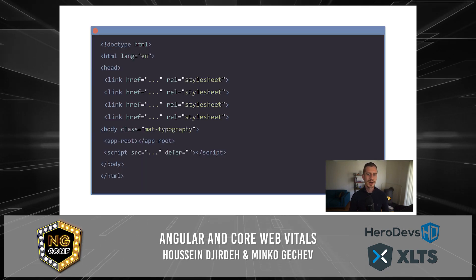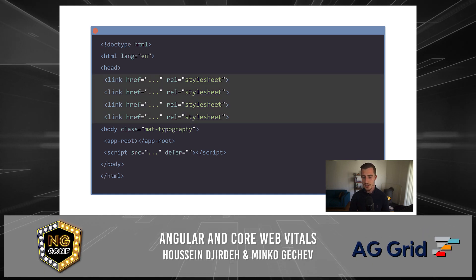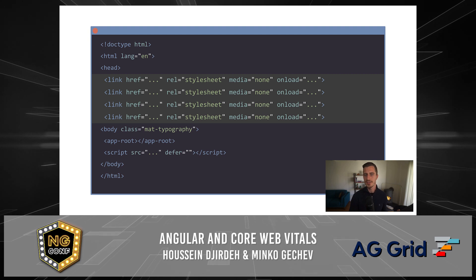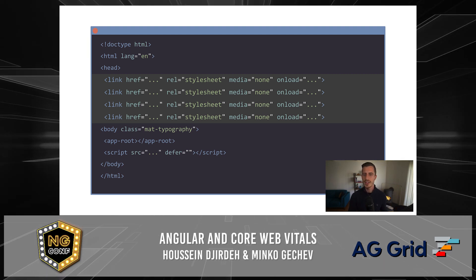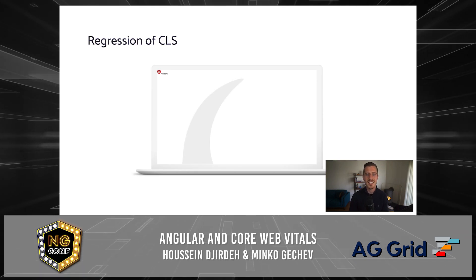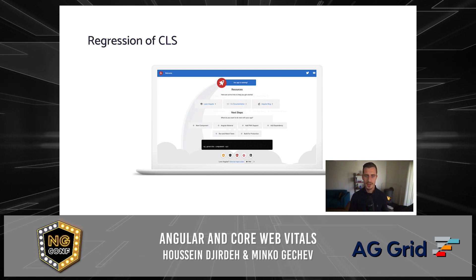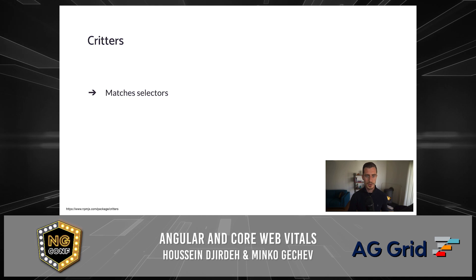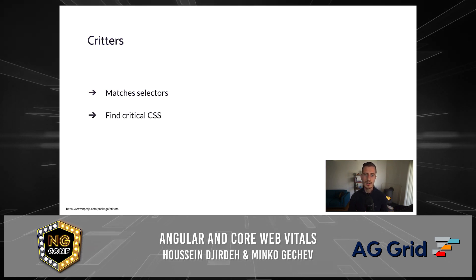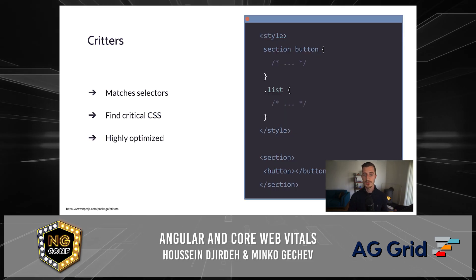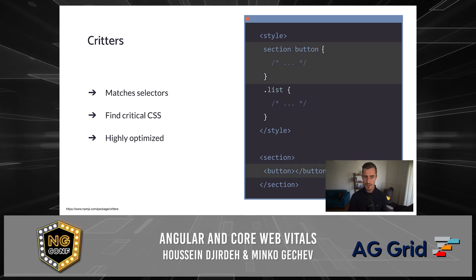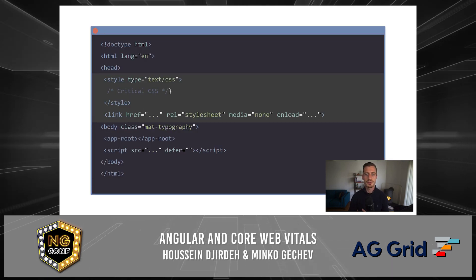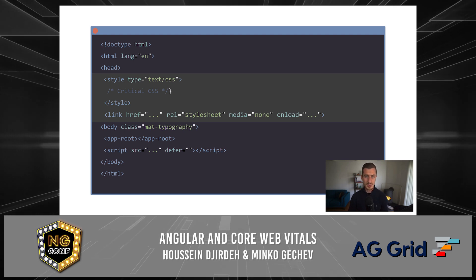At the same time, our app could have a lot of styles, which could delay both First Contentful Paint and Largest Contentful Paint. If we naively just load all the styles asynchronously — for example, by setting the media to none and handling the unload event — we can worsen the user experience. The browser will first render the unstyled content, then load the styles and apply them, causing regression in user experience and Cumulative Layout Shift. The Chrome team developed a tool called Critters, which at build time can match style selectors to the DOM and figure out the critical CSS in a performant way. Angular CLI uses Critters under the hood to find the critical styles and inline them in the application head, while the rest of the styles are loaded lazily.